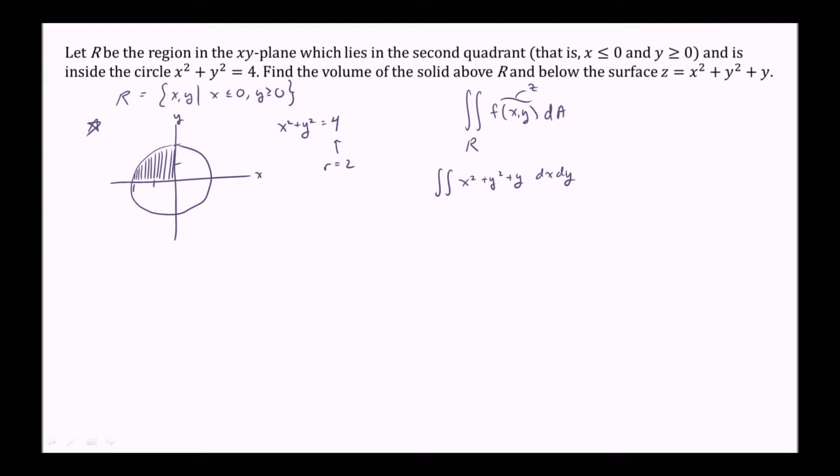Now let's figure out the bounds. Well this region really isn't very convenient for Cartesian integration, however, it's extremely convenient for polar integration. So for polar, we need to find bounds for theta and r. We can easily see that theta goes from pi over 2 to pi.